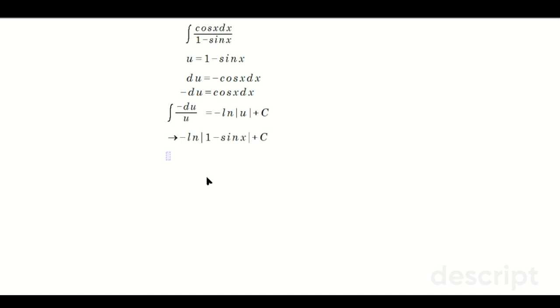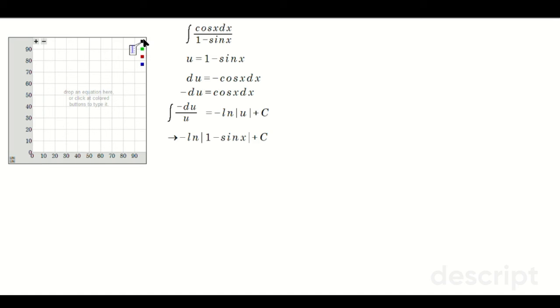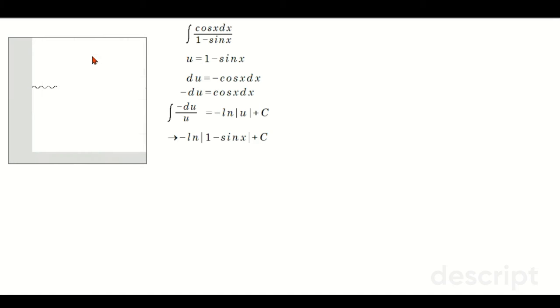But now notice a feature of 1 minus sine x. It's 0 or a positive number. Let's do a little graph over here on the side. Graph 1 minus sine x, the argument into the ln function here. Okay, so look at it.